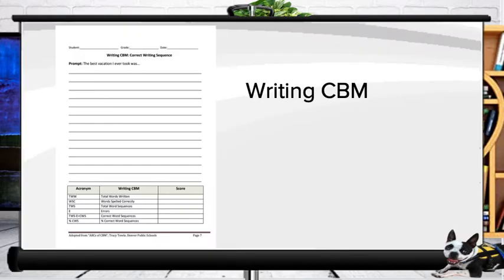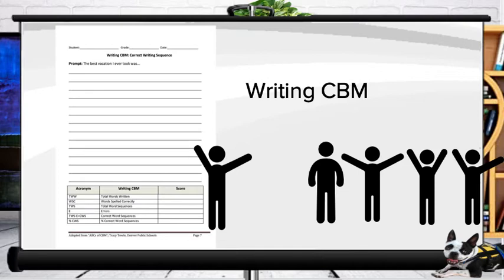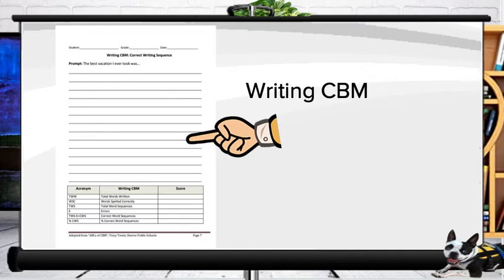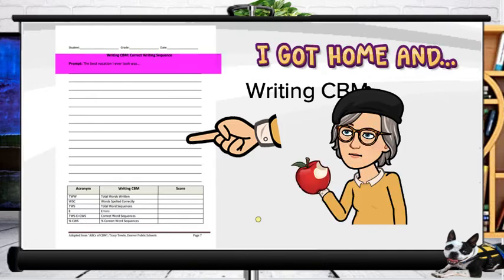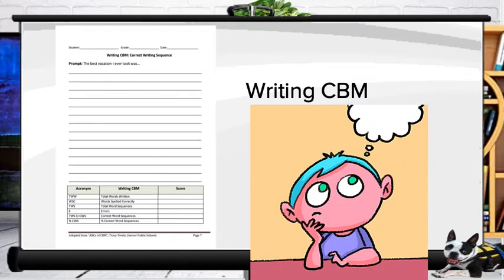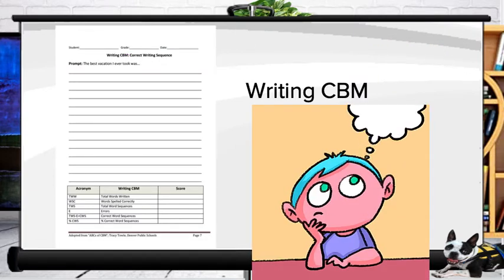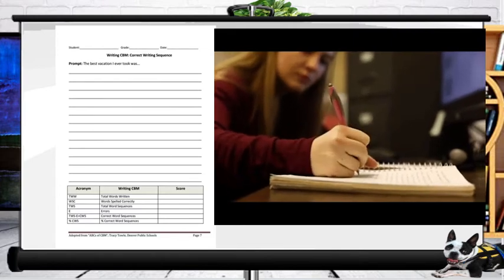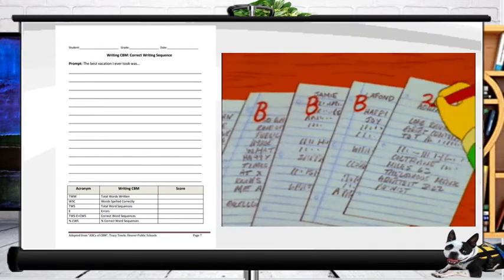The CBM writing probes are really simple to administer and we get lots of different scoring options, which is one of the reasons we like them. Similar to spelling and later math, which we'll talk about next week, the writing probes can be given individually to a single student or to a whole group of students all at one time. You'll have a piece of lined paper with a story starter sentence or partial sentence at the top, or maybe even some choices. The student gets to think for one minute about a possible story from the starter, then spends three minutes writing. You then collect the writing sample and score them.